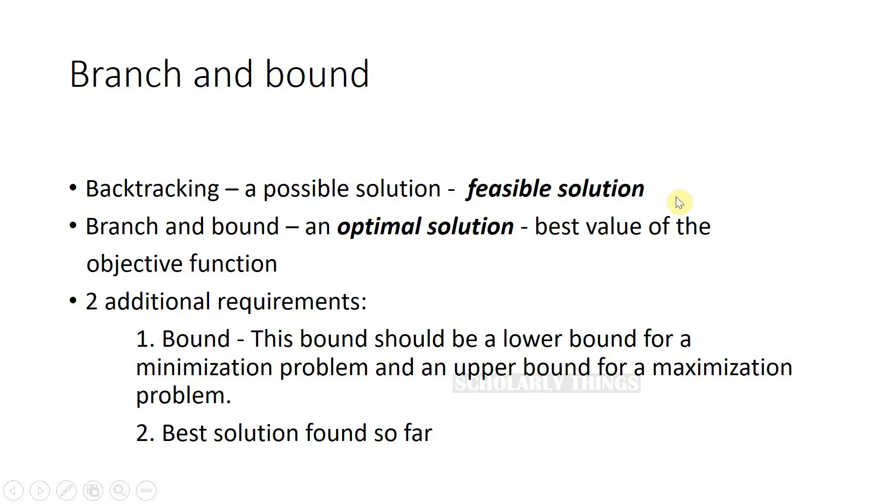If you recall, in the Hamiltonian circuit problem we just found the first possible route. The backtracking would continue to find other possible solutions, but what if there was an objective function like shortest Hamiltonian circuit, or in other case, the most valuable subset of items in the knapsack problem.